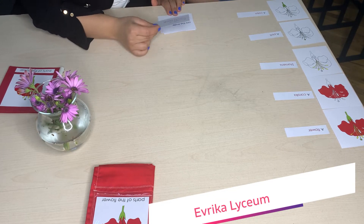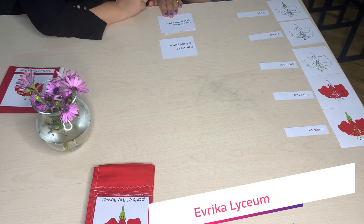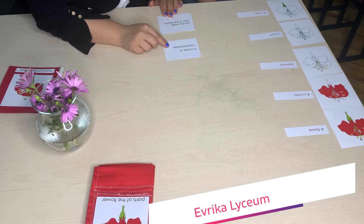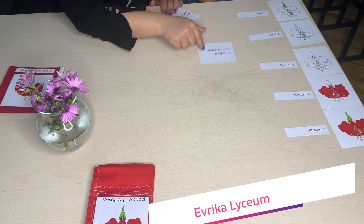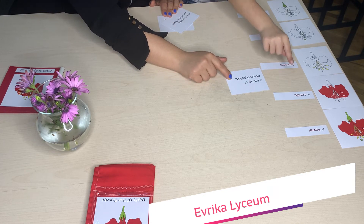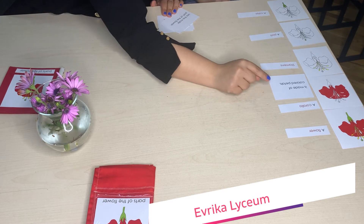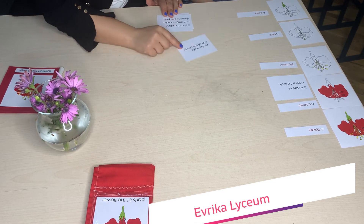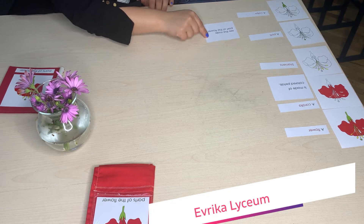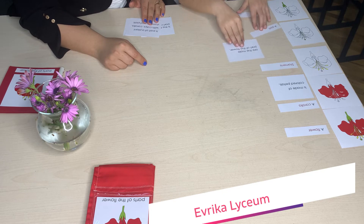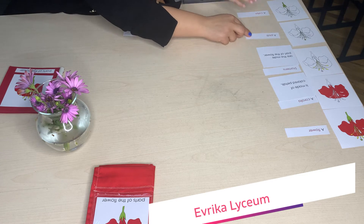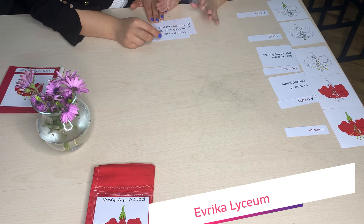Now we need to read and match with the pictures. 'Is made of colored petals' — let me see which one... this one? No. This one? No. This one? Yes, made of colored petals. 'Are the male part of the flower' — stamens are the male part of the flower. Then 'it's a part of the plant with...'